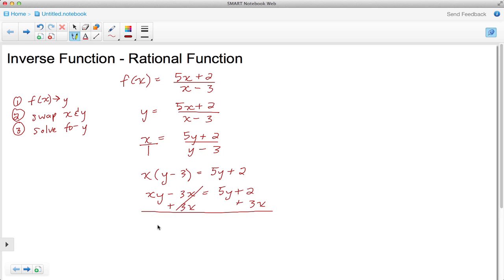In doing that that cancels and now I've got xy is equal to 5y plus 2 plus 3x and now let's get this 5y to the other side, so I'm going to subtract 5y from both sides. So it cancels here, and I've got xy minus 5y is equal to 2 plus 3x. I'm going to rewrite everything up here.